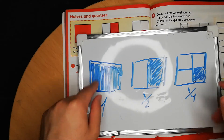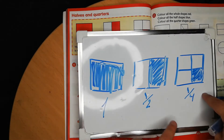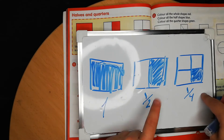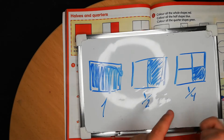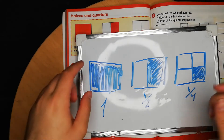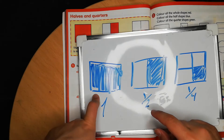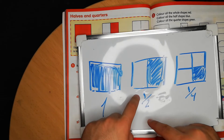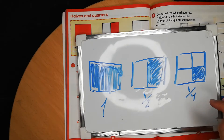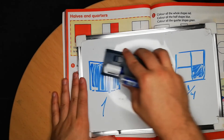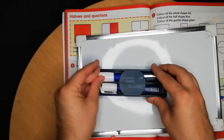Which one is more? Which one is less? Quarter is the least. So quarter is less than half, half is less than one, one is more than half, and half is more than quarter. So: a whole square is blue, half the square is blue, and a quarter of the square is blue.